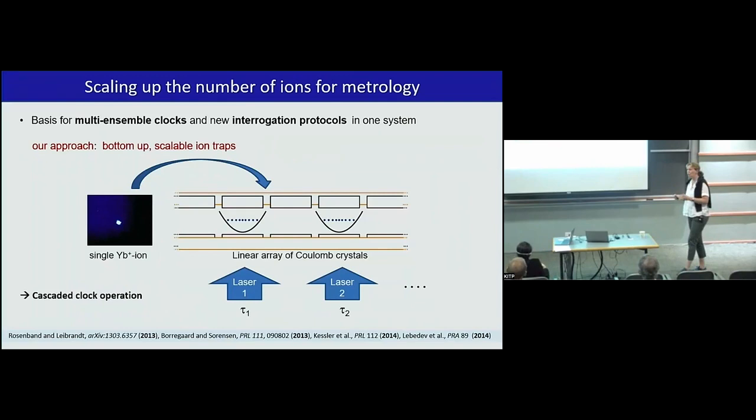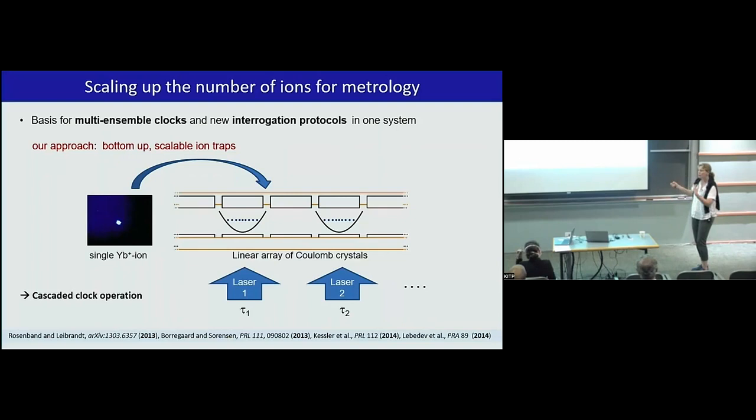Our approach in the beginning immediately was, we want to build a multi-ensemble clock. The ion traps that we developed at PTB were always targeted to have many different clocks, scalable, in a single ion trap setup. So that we, in the future, have really a multi-ensemble clock operation, where we eventually also can go to a cascaded regime, pre-stabilize delays on one ensemble, and then push further the interrogation time.